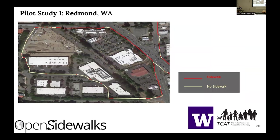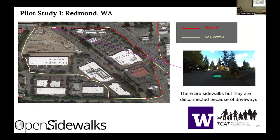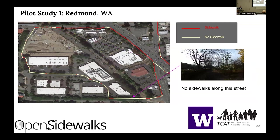I will share some results from a pilot study done in Redmond, Washington state, where we tried to map an under-construction transit station. Different colors represent different findings: red indicates where the system inferred sidewalks to be present, and yellow indicates where the system inferred missing sidewalks. In the first example, the entire path has sidewalks and is well connected, so the entire portion is marked red. In places where sidewalks are present but disconnected — sometimes because of driveways — we see a mix of red and yellow. In places where there are no sidewalks along the entire street, the entire portion is marked yellow.